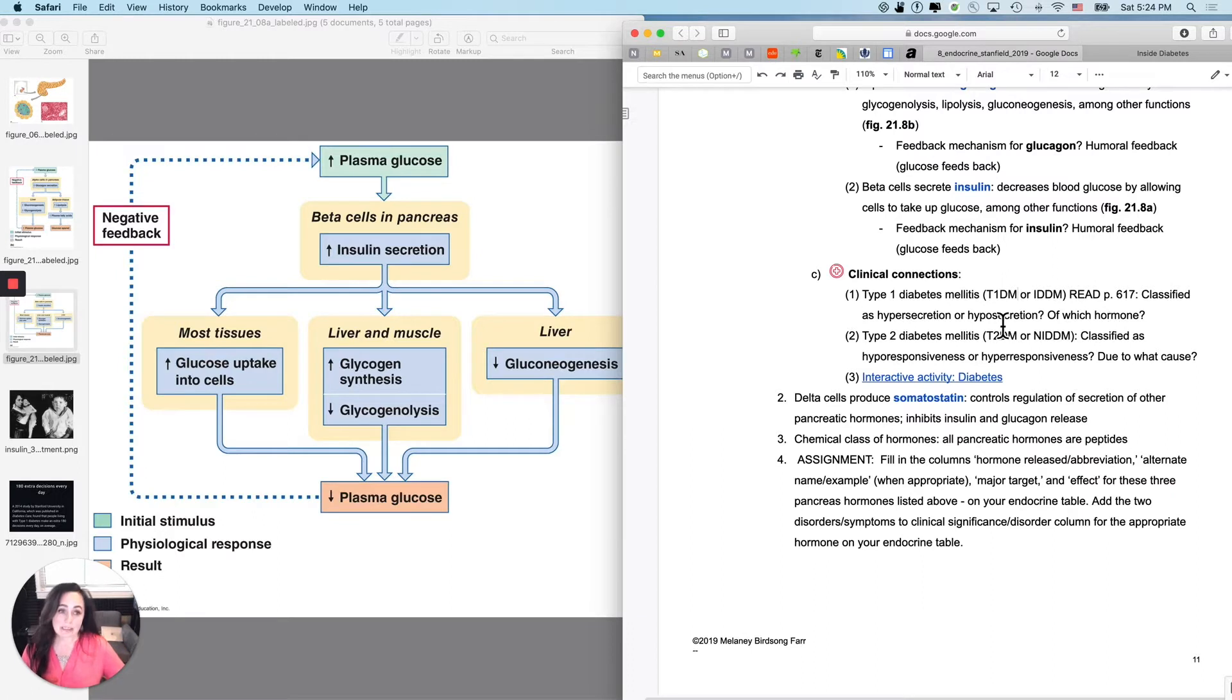What this is, is a hyposecretion of insulin. Generally with type 1 diabetes mellitus, it's autoimmune, but it can have a genetic predisposition. For instance, you don't inherit type 1 diabetes mellitus, but you may inherit the predisposition to autoimmune diseases and that can manifest as type 1 diabetes. So it's generally got a genetic predisposition with an autoimmune trigger.